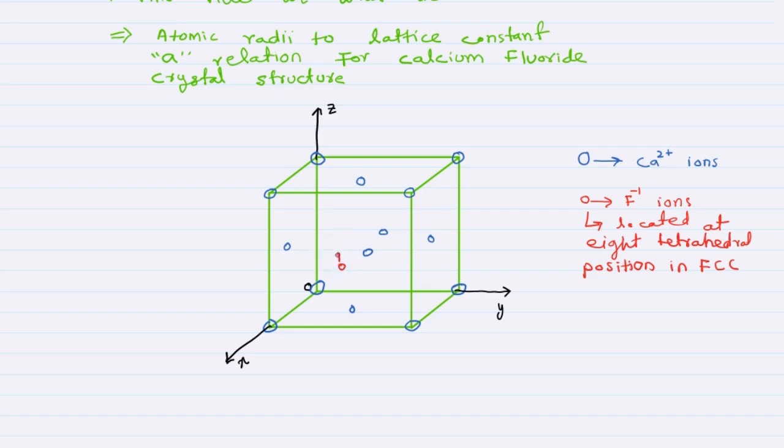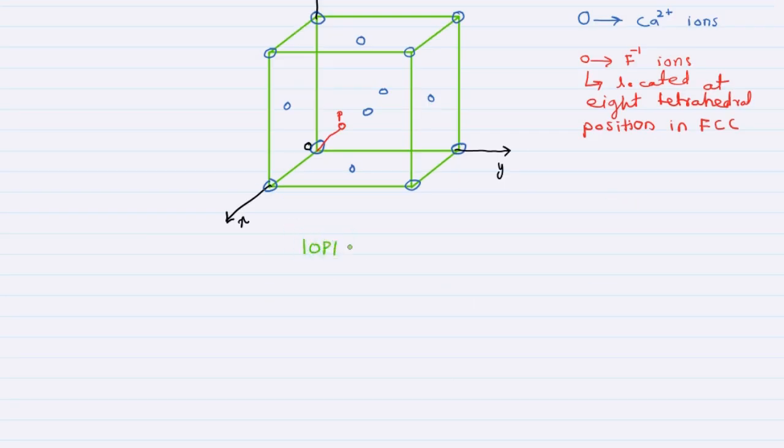This is a fluoride ion at point P and this is the distance OP. We have to find this distance OP. This distance equals the radii of the two ions, calcium and fluoride. So OP equals radius of calcium ion plus radius of fluoride ion.